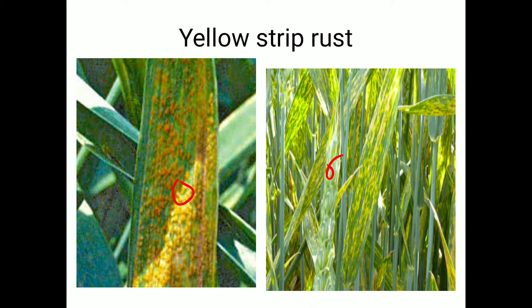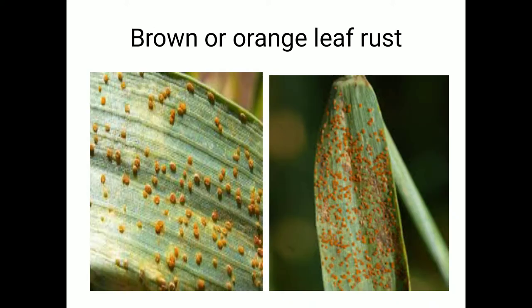Regarding chemical control, we can apply Cyanide 0.25% plus 2% urea.